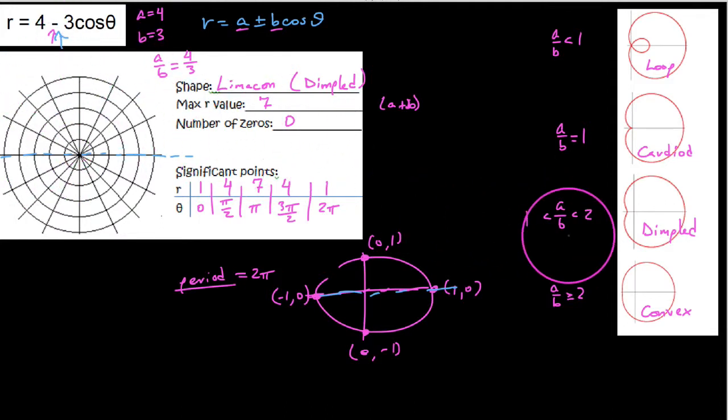So using the fact that this is a dimpled limaçon, we see this one opens to the right with a positive b-value here. We're going to have to have something that kind of opens to the left, so like this. So let's take a look at this.